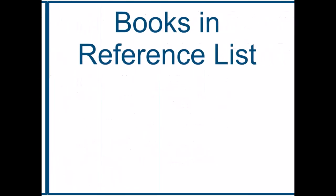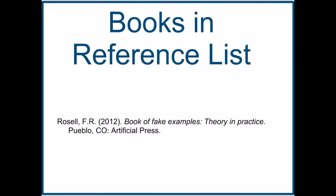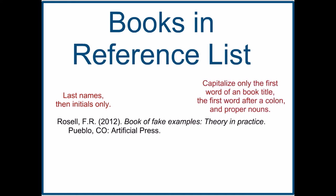As for books in your reference list, they're similar to articles in that you should include the author's last name, then only their first initials. The title of the book should be in italics, but you should only capitalize the first word in the title, the first word in the subtitle, and any proper nouns. After the title, include the publishing city as well as an abbreviation of the state, and the last element in the citation is the name of the publisher.